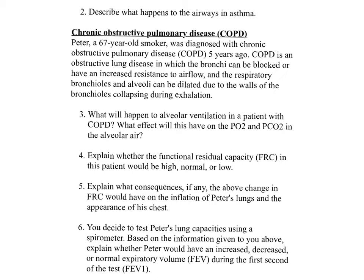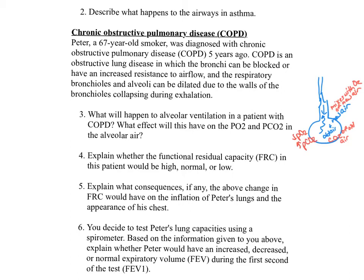Question three: what will happen to alveolar ventilation in a patient with COPD, and what effect will this have on PO2 and PCO2 in alveolar air? Alveolar ventilation will be decreased. Since the person can't exhale the normal amount of air from the alveolus, the old air remains in the alveolus and is mixed with new air during inhalation. The PO2 of the alveolar air will be reduced and the PCO2 will be increased compared to normal, and therefore the gradients for gas exchange will be reduced, meaning there will be less of a concentration gradient between the alveolus and the blood.